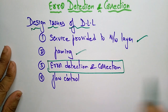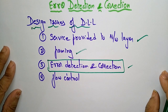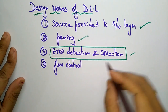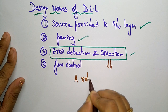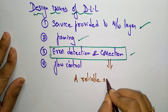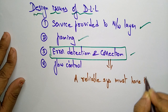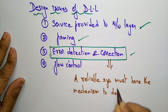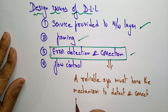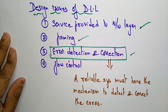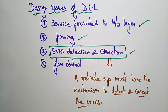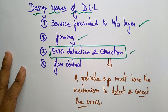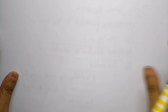Error detection and correction is a key design issue related to the data link layer. If you take any reliable system, a reliable system must have a mechanism to detect and correct errors. Whatever the reliable system may be, it already has a mechanism to detect and correct errors. Let us see how it is going to detect errors and how it is going to correct those errors. Before going into different error detection and correction techniques, let us see the different types of errors.